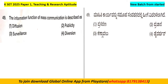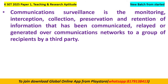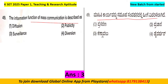Question number 49: the information function of mass communication is described as — Option A: diffusion, Option B: publicity, Option C: surveillance, Option D: diversion. Communication surveillance is the monitoring, interception, collection, preservation and retention of information that has been communicated or generated over communications networks to a group of recipients. So the right answer is Option C: surveillance.